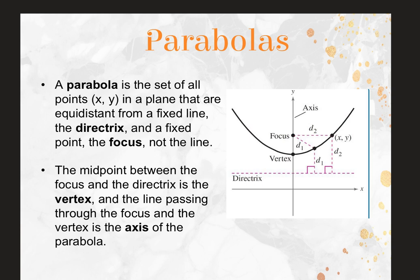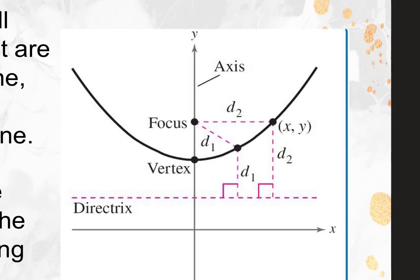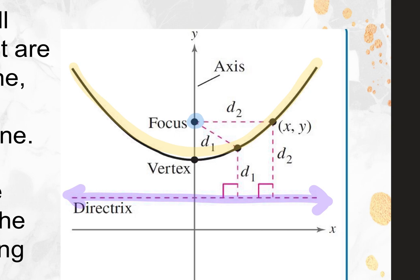By definition, a parabola is the set of all points in a plane that are equidistant from a fixed line called the directrix, and a fixed point called the focus. There is a point a fixed distance away from the vertex inside the scoop — that's the focus. There's a line the same distance in the other direction — that's the directrix. When graphing, you will identify a vertex, a focus, and a directrix.